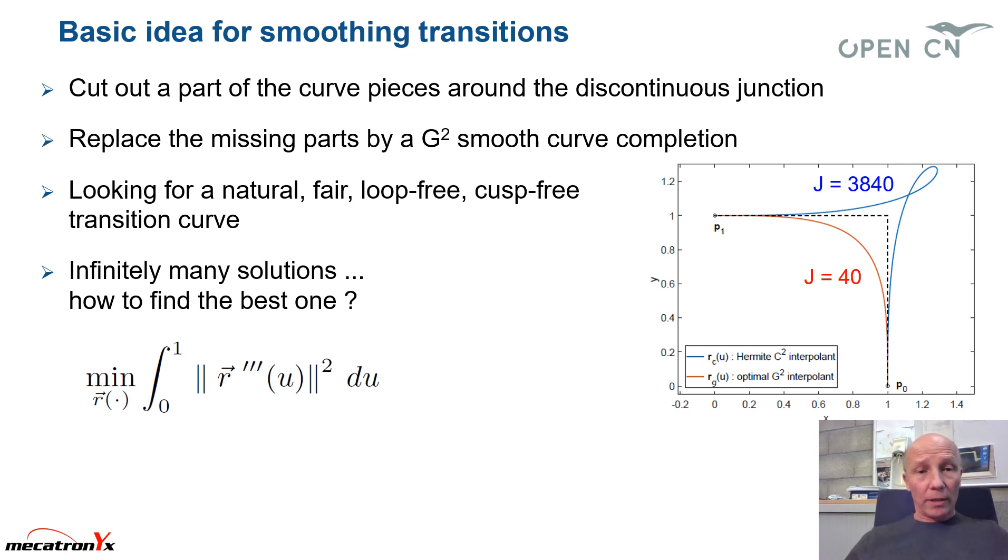So the cost function we propose is the following. It's the integral of the norm of the third parametric derivative of R. So this is the curve, the cost function we propose. And as you can see for the blue curve here, the blue transition, the cost value is about 3840. And for the good one here, for the red one, the cost function is only 40, which is a motivation for the choice of this special cost function to be minimized.